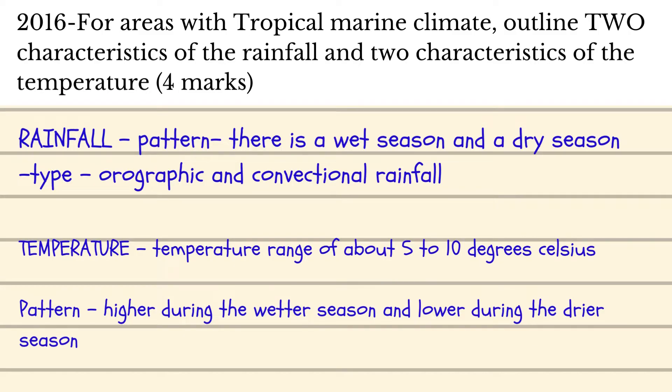This question says: for areas with tropical marine climate, outline two characteristics of the rainfall and two characteristics of the temperature, for four marks. Remember, characteristics of rainfall could include the amount of rainfall, the pattern of the rainfall, or the type of rainfall. You would choose two characteristics and say something about each of them.